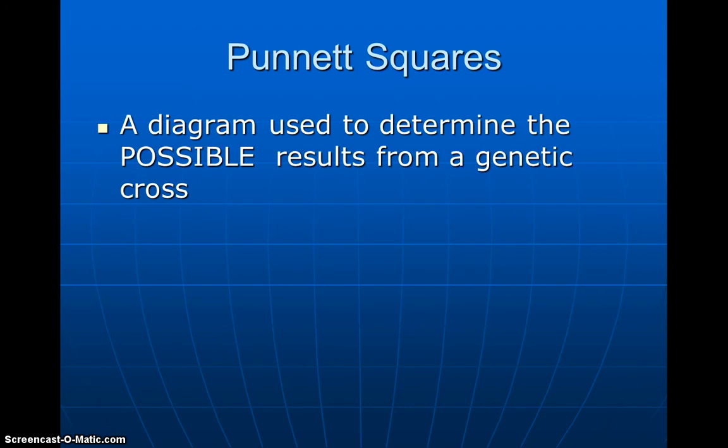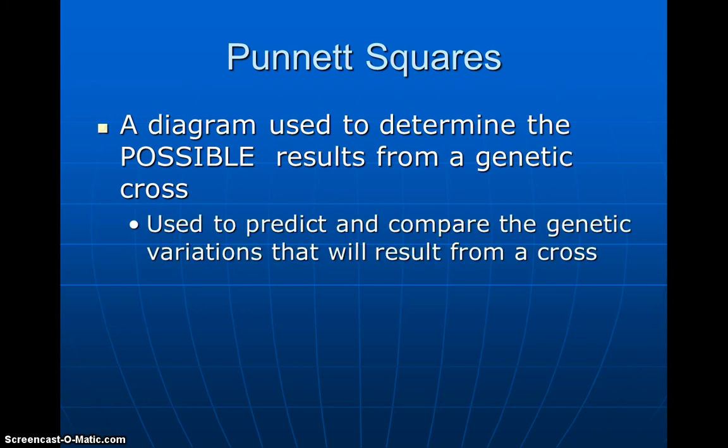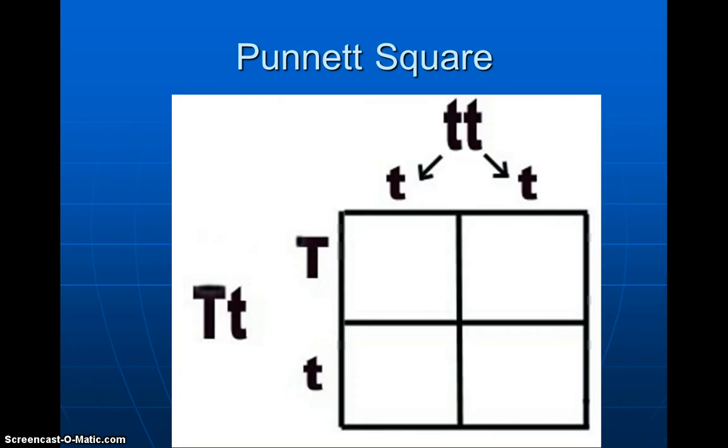Punnett squares. Punnett squares are a diagram used to determine the possible results from a genetic cross. They're also used to predict and compare the genetic variations that will occur from a cross. So here's an example of a Punnett square. We're going to talk about how to fill this out later.